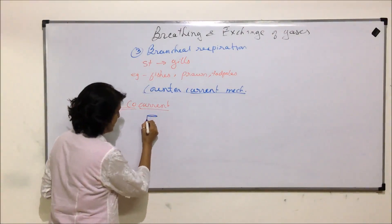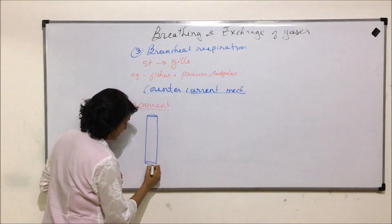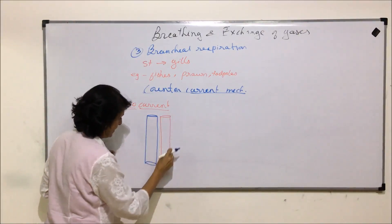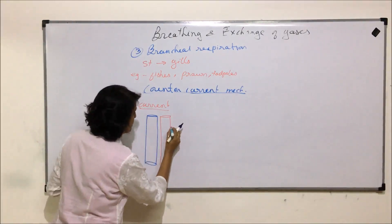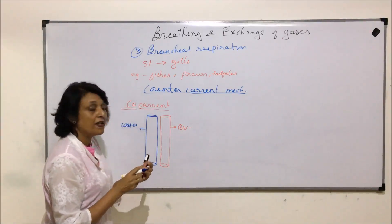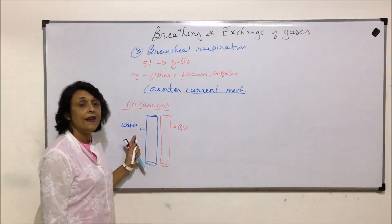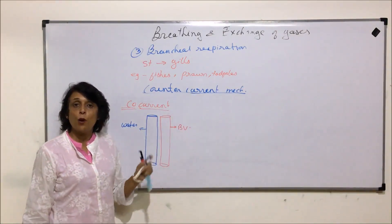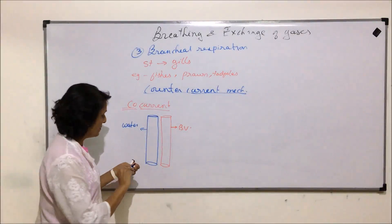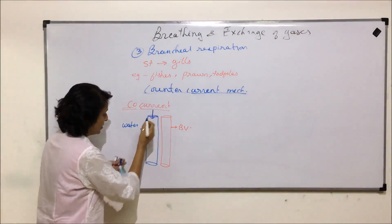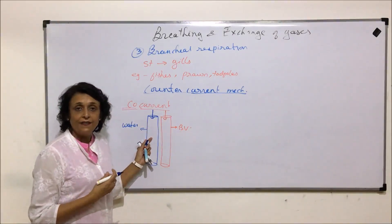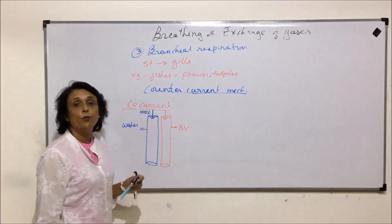If we represent this blue pipe-like structure taking water and the red structure taking blood — this is the blood vessel and this is the water — we are talking of co-current first, so that we understand how this mechanism helps in proper exchange of gases. Here, water and blood through the capillaries flow in the same direction. Water which is entering the gills is 100% saturated with oxygen.